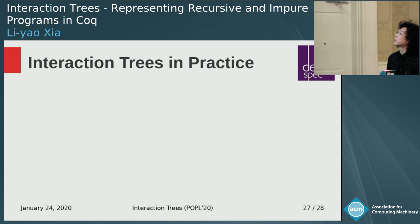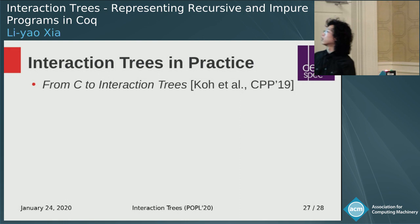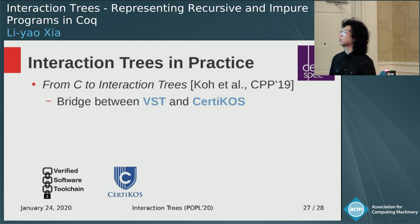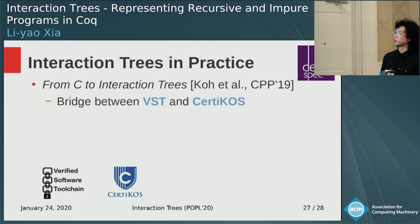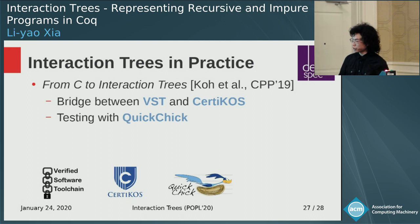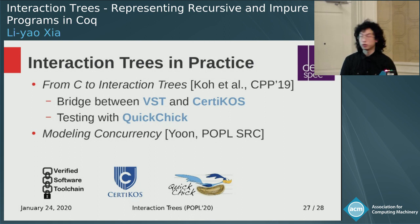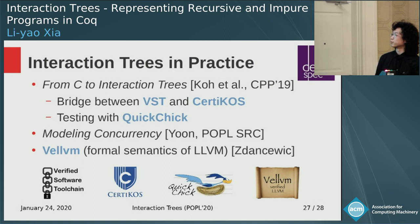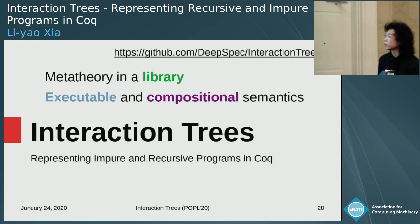There are many more ways of using interaction trees. In previous work, we used them for modeling the IO behavior of C programs and connecting the semantics of C used by VST and those used by CERTI-COS. We used the executable nature of interaction trees to test using the QuickChick tool. More recently, there was a poster this week about using interaction trees to model concurrency, and you can also ask Steve about how they are used to model LLVM. Thank you.